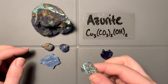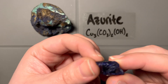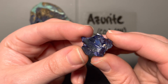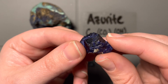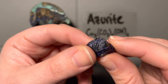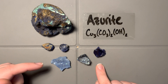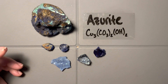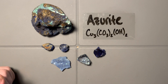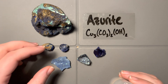Azurite is a monoclinic mineral. It's difficult to see the monoclinic form clearly, but there is a crystal face visible here, and this other face looks like a cleavage face. The variety of crystal habits is something to notice — azurite is happy to grow wherever as an oxidization mineral.